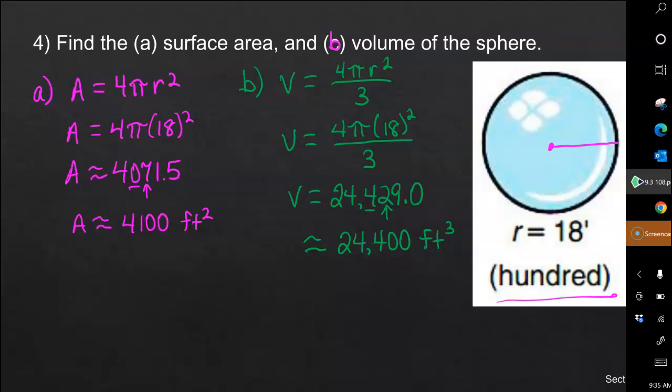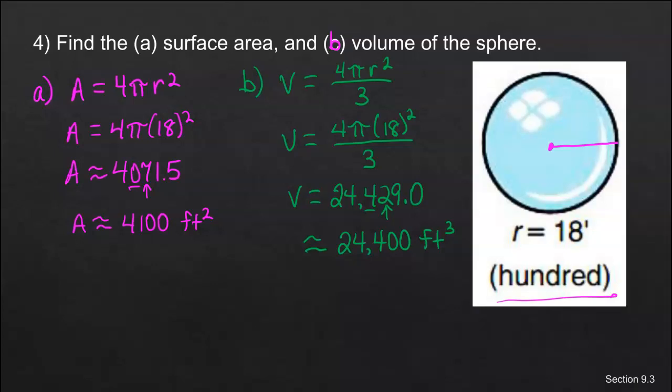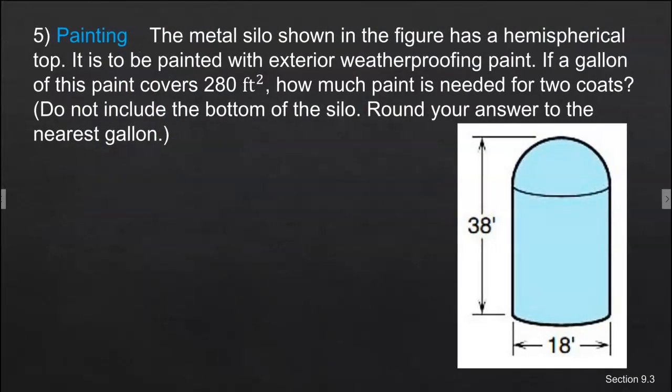The one nice thing about a sphere is you basically have the one measurement, and that's what you go with. That makes it kind of handy. Here's our next example. So as you can see, this one is a combination problem, and our combination here is of a hemisphere, so a hemisphere is half a sphere, and then a cylinder. So we have some different things we have to do.